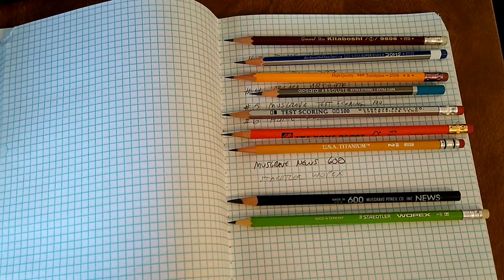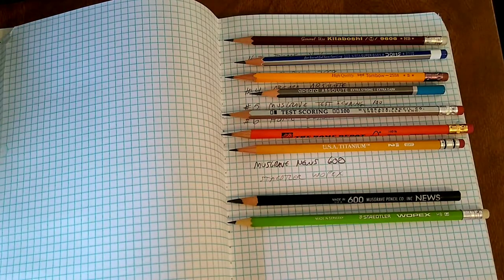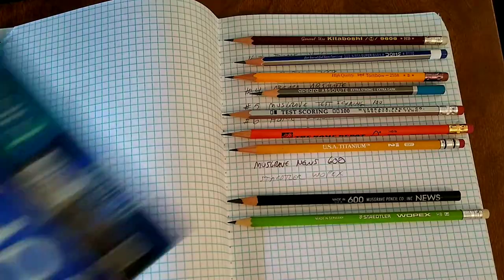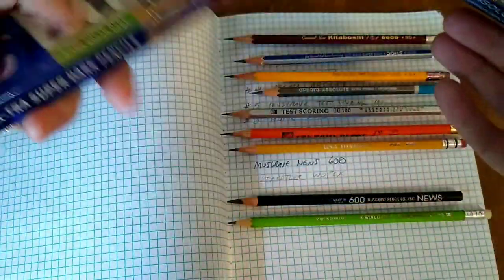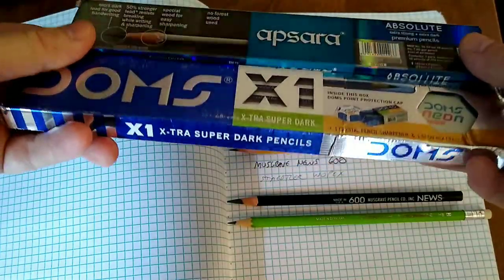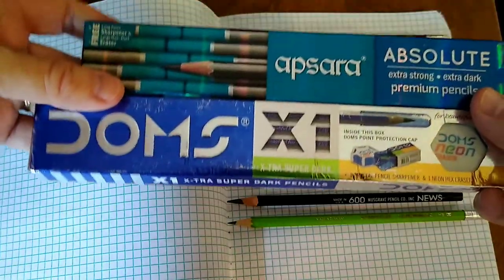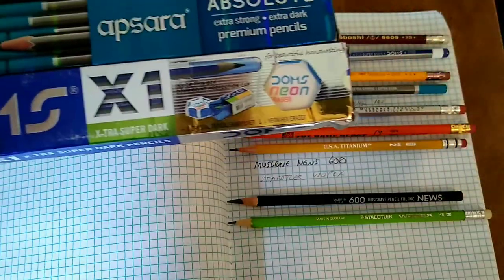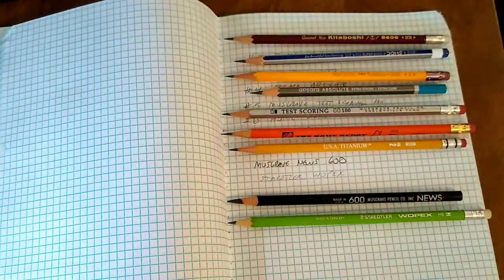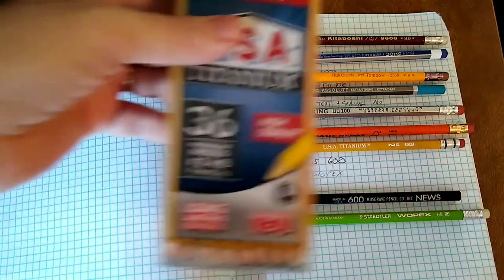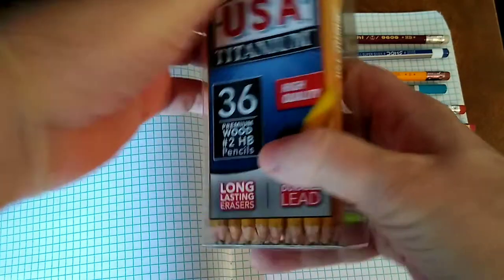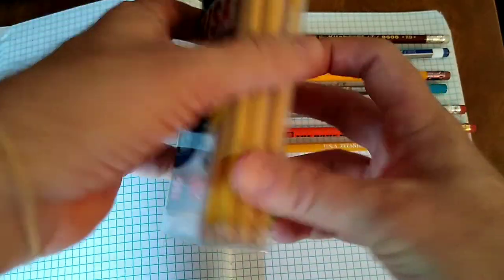So that completes the top seven with two honorable mentions here, my favorite writing pencils. Just to kind of show you, the Apsara and the Doms pencils I ordered in a box. They came from India and got beat up a little bit in the travel, but when you order Indian pencils, they tend to come in a box of 10, these kind of pretty boxes they always have. There's usually an eraser and sharpener in the box. So these did come with eraser and sharpener since there are not erasers on the pencils themselves. The USA Titanium pencils I found at Walmart in a box like this. So a ton of pencils were marked way down after the back to school sales were gone.